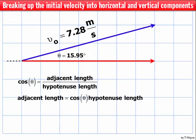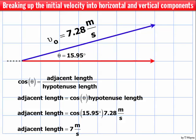Then I'll rearrange this to solve for the adjacent length, so adjacent length is equal to cosine theta times the hypotenuse length. Throwing in my numbers, the adjacent length is equal to the cosine of the angle, 15.95 degrees, times the hypotenuse, 7.28 meters per second. When I do the calculations, that gives me 7 meters per second. So now the horizontal side is 7 meters per second.